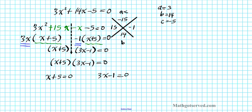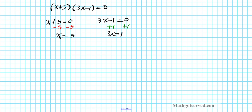To solve the first equation, we subtract 5 from both sides, giving x equals negative 5. For the second equation, we add 1 to both sides to get 3x equals 1, then divide both sides by 3, giving x equals 1 third.